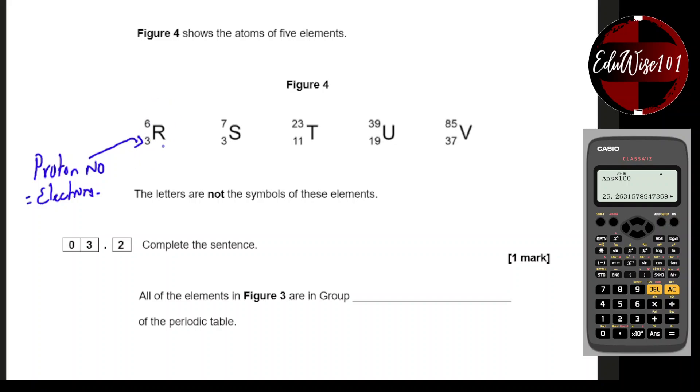Remember, this bottom number is the proton number, which is also equal to the number of electrons. Element R has 3 electrons, S has 3, T has 11, U has 19, and V has 37 electrons. The first shell has 2 electrons, the second has 8, then 8, and so on. So 2,1 is the electron configuration for R, and 2,1 for S. Because these two have the same number of protons, they're isotopes.